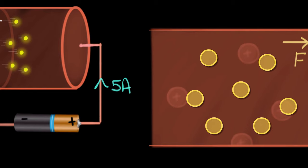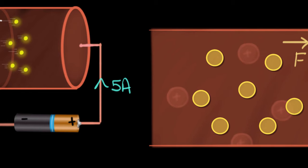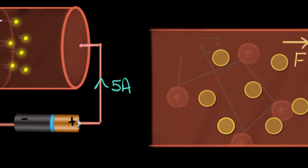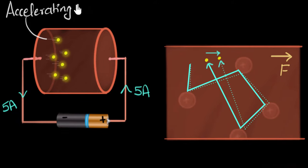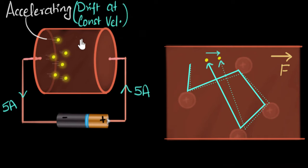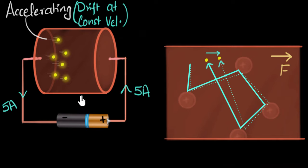This drift velocity — the average velocity the electron has now acquired — is a constant. The electrons are accelerating, yes, but they drift at constant velocity. Why? Because the battery is accelerating them forward, but the collisions are decelerating them, and that balances out. As a result they end up moving with a constant drift velocity. We will derive this mathematically in another video. And because the drift velocity is constant, that's why we have the same current everywhere in the circuit.